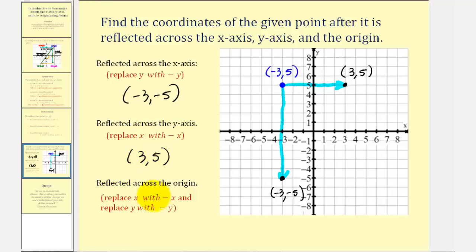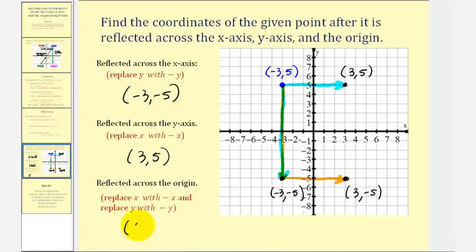And then finally, to reflect across the origin, we take the given point reflected across the x-axis and then the y-axis, which would be from here to here, and then from here to here. So notice how the new coordinates would be three, negative five. Comparing this to the original point, notice how we change the sign of both the x-coordinates and the y-coordinates. So the new coordinates would be three, comma negative five. Our notes say replace x with negative x and replace y with negative y, which we did by changing the sign of both coordinates. I also want to mention that if we reflect a point across the origin, that would be the same as taking the original point and rotating it 180 degrees about the origin from here to here. I hope you found this helpful.